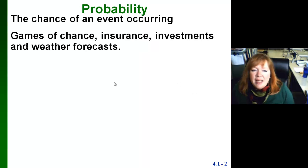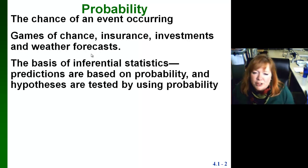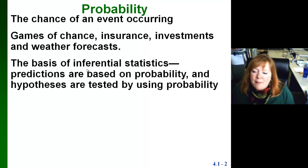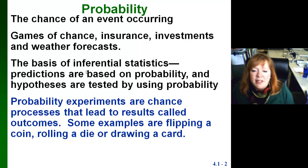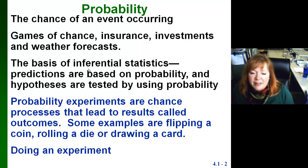Probability is also used in games of chance, insurance, investments, and weather forecasts — like how likely is it that I'd win the lottery. Not very, unfortunately. It is also the basis of inferential statistics. All our predictions are based on probability and hypotheses are tested using probability. Probability experiments are chance processes that lead to results called outcomes. Some examples are flipping a coin, rolling a die, or drawing a card. Doing an experiment once is called a trial.